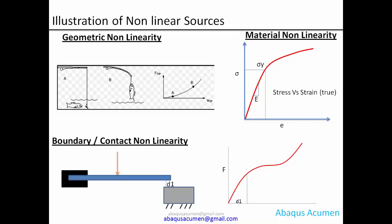Typically there are three types of non-linearity in mechanical engineering simulation software: geometrical non-linearity, material non-linearity, and contact non-linearity. Geometrical non-linearity occurs when your displacement is non-linear — for example a fishing rod, where displacement is no longer a linear function of force but a non-linear function.